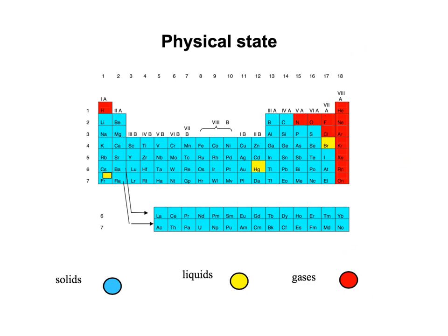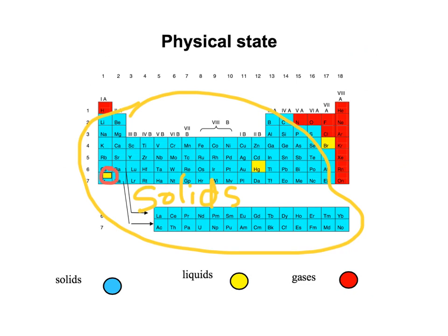What about the physical state? If the majority of the elements are metals, it is obviously known that almost all of them are solids. This in blue, all the blue means solids. And what about these marked in yellow? They are the only gases in the periodic table.